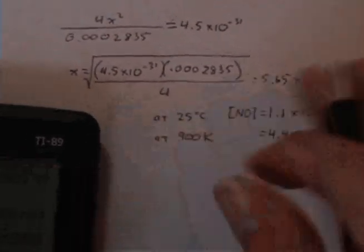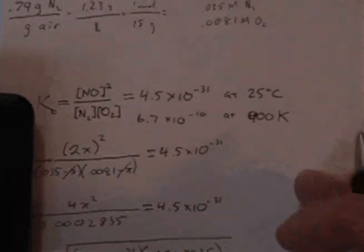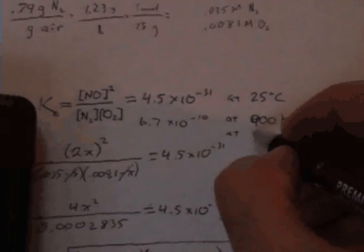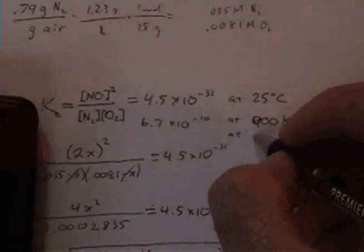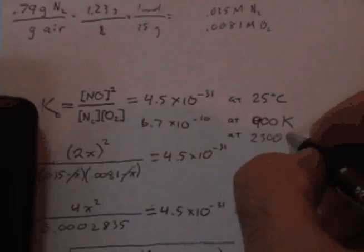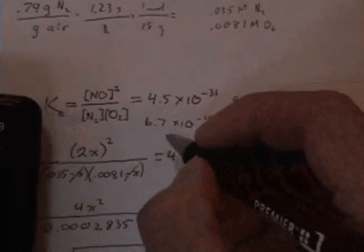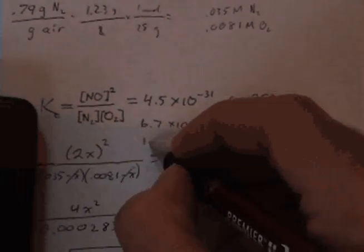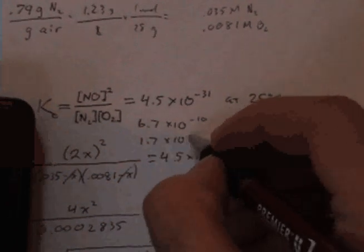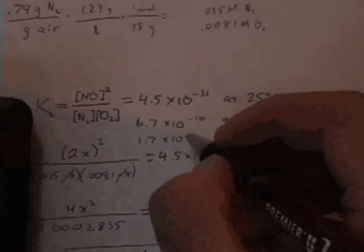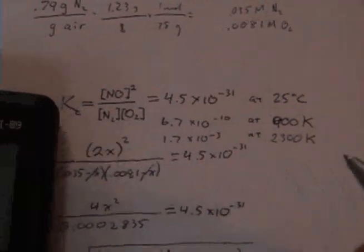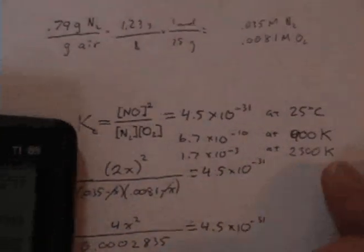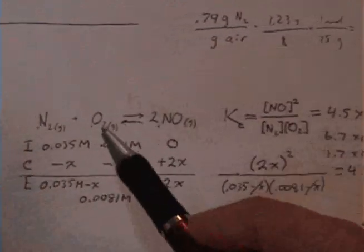All right, so let's do this one more time at even a higher temperature. Because at 2300 Kelvin—about 2,000 degrees C—it's 1.7 times 10 to the minus 3rd.